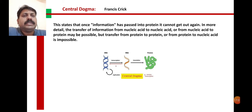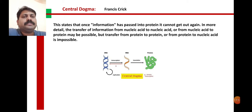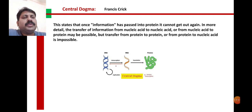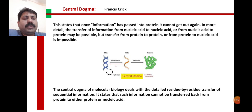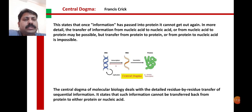In more detail: transfer of information from nucleic acid to nucleic acid (DNA to RNA), or from nucleic acid to protein, is possible. But transfer from protein to protein or from protein to nucleic acid is impossible. This is the Central Dogma of Molecular Biology.